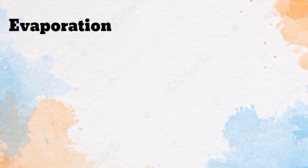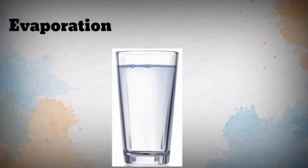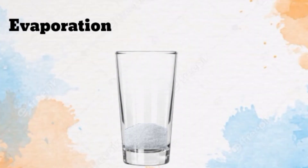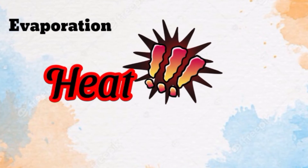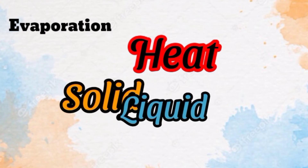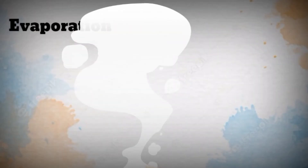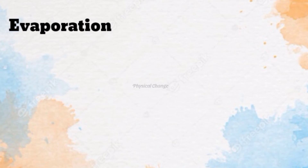So what is evaporation? Evaporation is a process of separating mixtures which involves heating the solution until the solvent evaporates, leaving behind the solid residue. Heat, being the main component in this process, separates the mixture of solid from a liquid, as liquid goes into the air in the form of gas when heated — changing liquid to gas as an example of physical change.